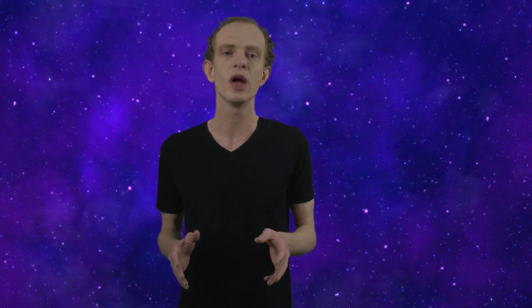The main predictions were that if the then-current trends of population growth, industrialization, and resource consumption continued, we would eventually reach a point where the Earth's resources would become scarce and the global economy would collapse. The book suggested this collapse might happen by the middle of the 21st century if no action was taken.